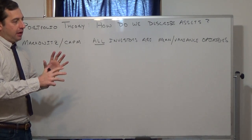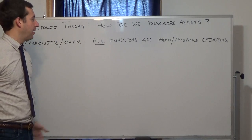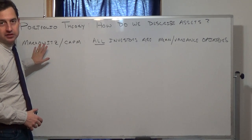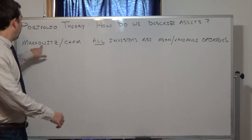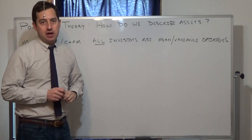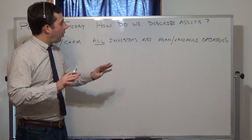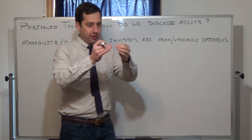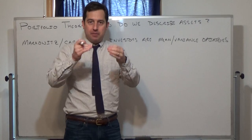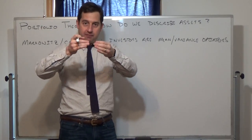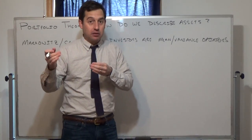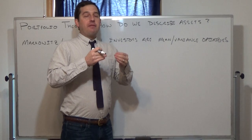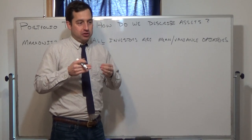Skipping ahead a bit: the CAPM assumes Markowitz, so the assumptions of the CAPM are the assumptions of Markowitz plus some additional ones. In Markowitz, all investors are mean-variance optimizers — they only care about the mean and the variance, the first two moments of the probability density function. We describe an asset by its probability density function, and importantly by its joint probability density function showing how it relates to other assets.